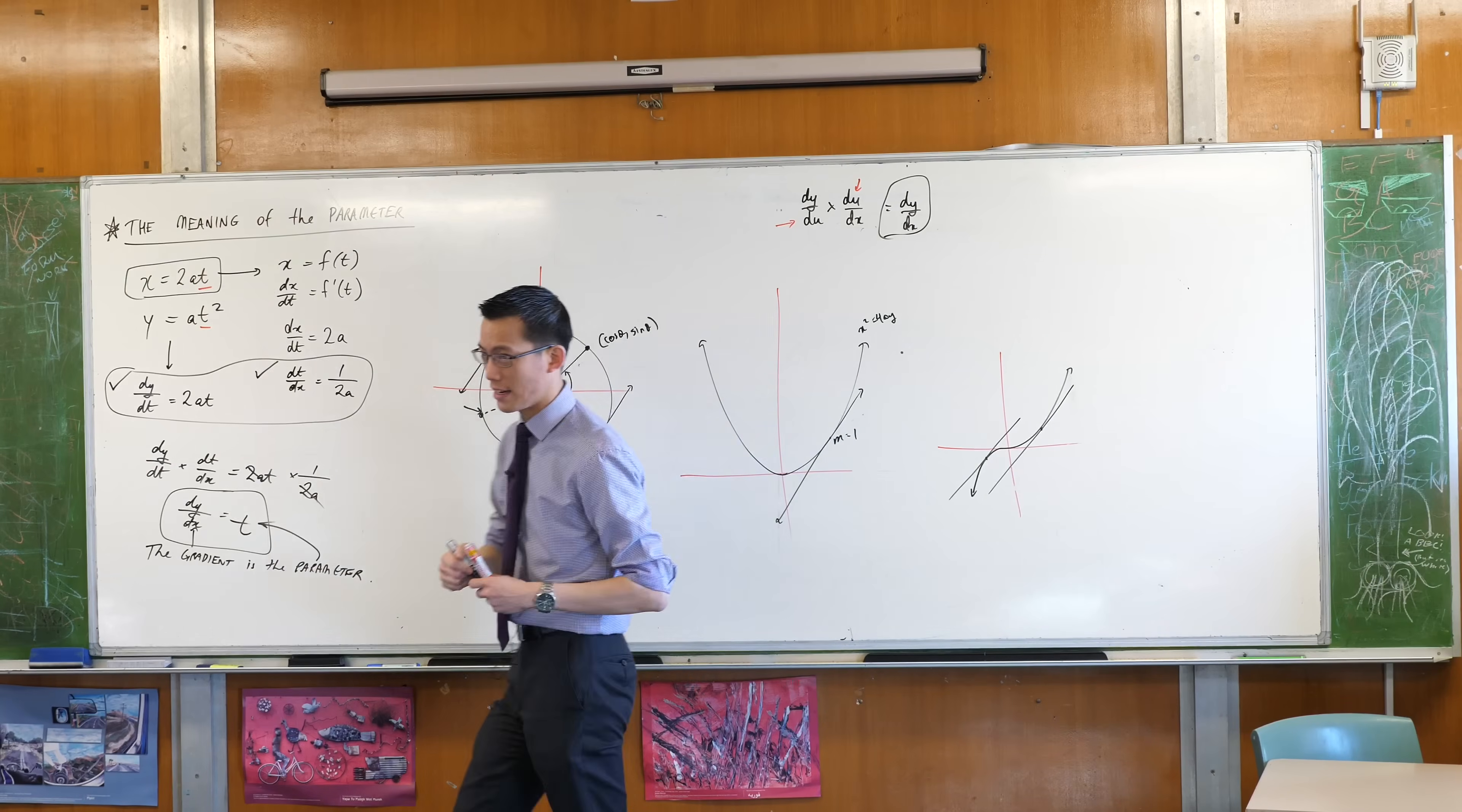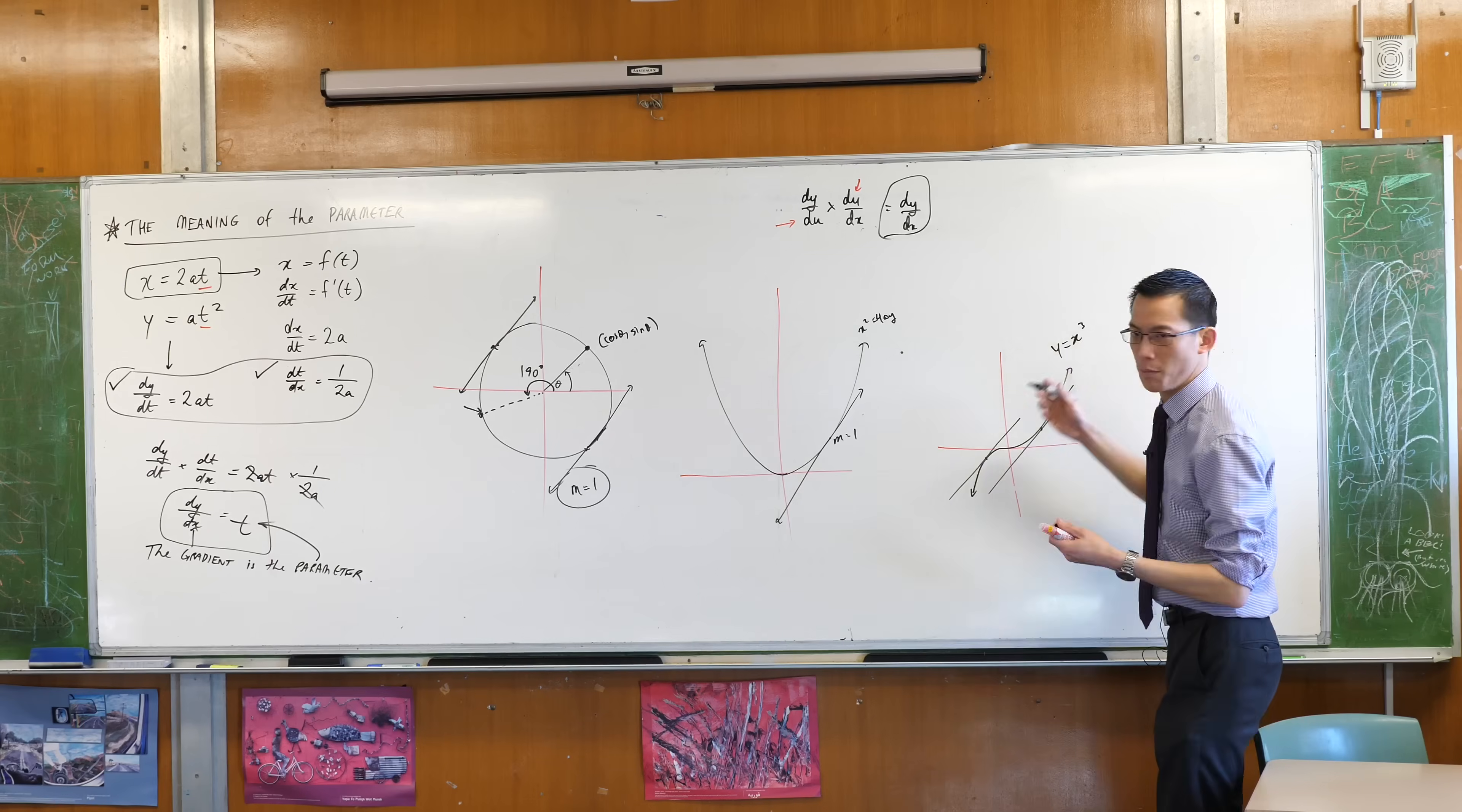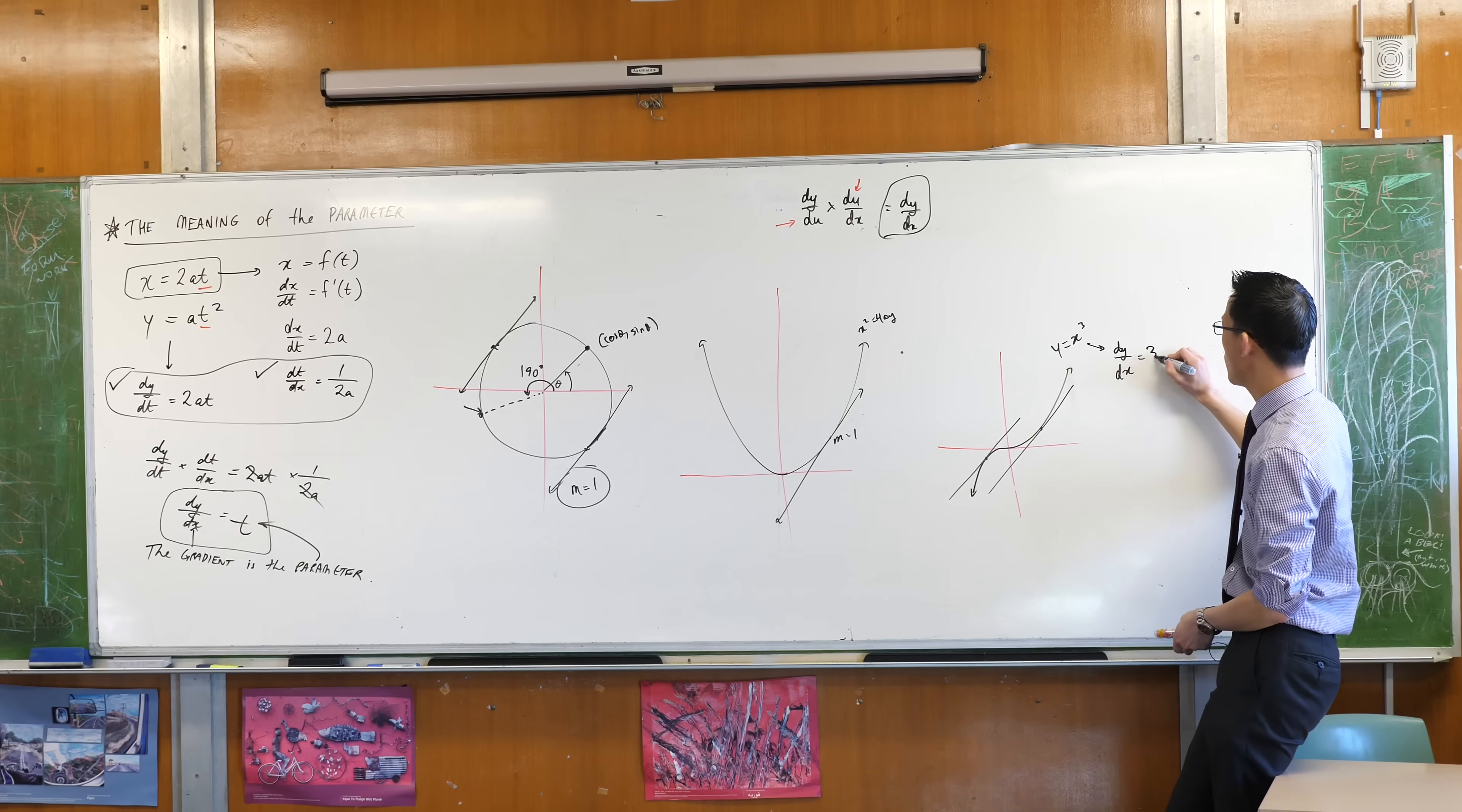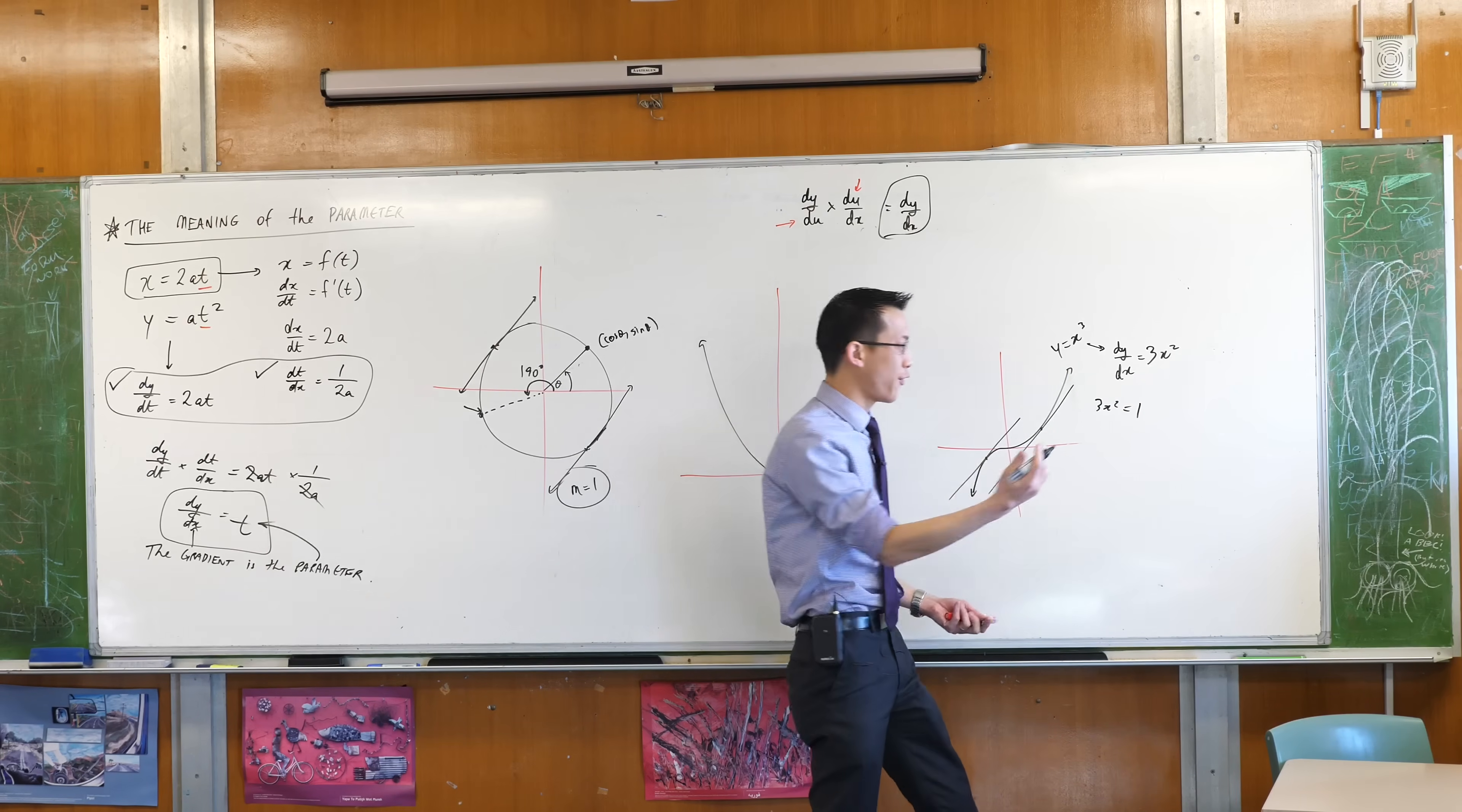And no matter what cubic you've got, you'll find repeat spots where they've got identical gradients. That should make sense if you think about it, because this could be y equals x cubed. When you differentiate this to find the gradient, the derivative, what kind of function is the derivative? The derivative is going to be a quadratic.